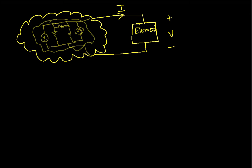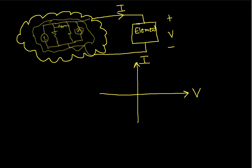The idea is that we can characterize an element in a circuit in terms of a voltage current curve. So we draw a voltage current curve with a voltage axis and a current axis. The idea is that most circuit elements you'll deal with constrain the voltage across them and the current through them to conform to some rule that we can express as some sort of line on this voltage current curve.